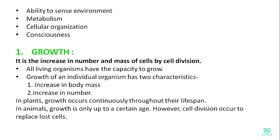The first characteristic is growth. Growth is the increase in number and mass of cells by cell division. All living organisms have the tendency to grow. Growth of an individual organism has two features: first, increase in body mass, and second, increase in number. In plants, growth occurs continuously throughout their lifespan, whereas in animals, growth is only up to a certain age. However, cell division still occurs to replace lost cells.